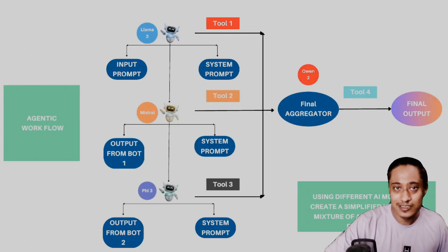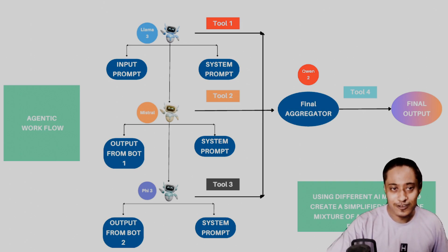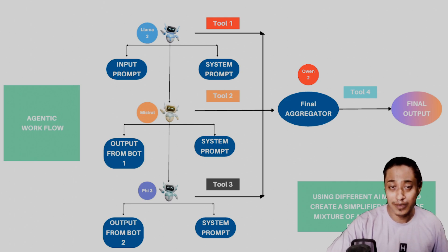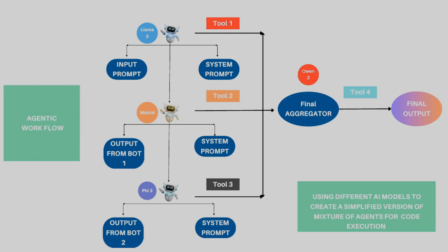Let me show what is happening behind the scenes. This is an agentic workflow: an input prompt and system prompt are given to the first model — LLaMA 3 — then the output is transferred to the second model, then the third, then aggregated into a final output. That's exactly what we saw in the demo.